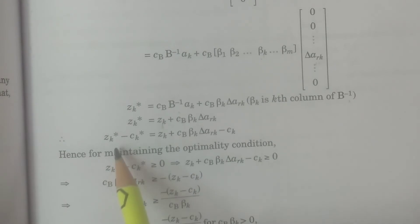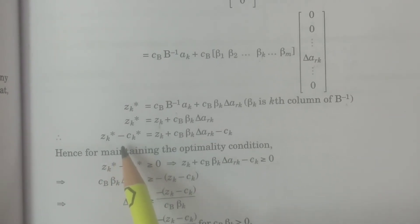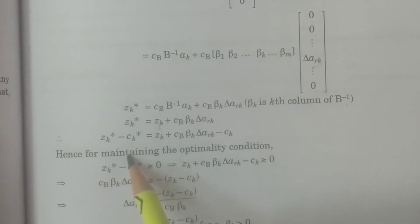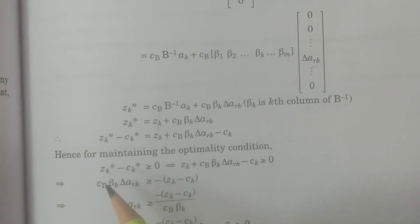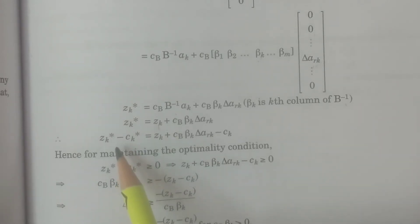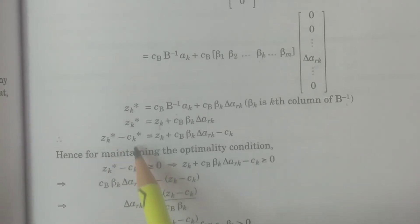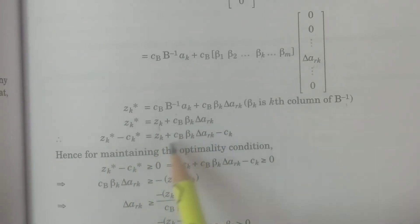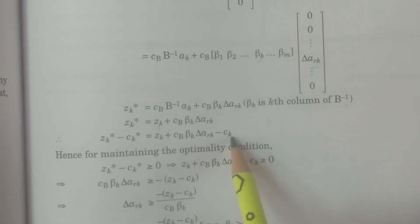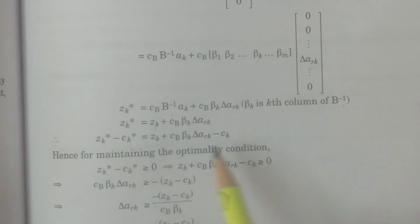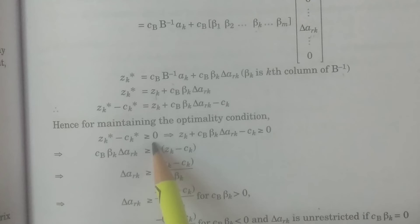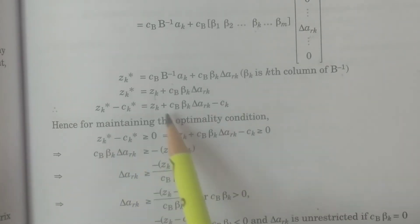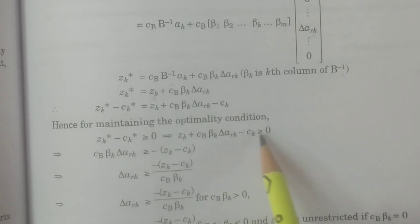Now, to prove optimality, the optimality condition requires zk-star minus ck-star greater than or equal to zero. The remaining net evaluations are already greater than or equal to zero since we started from the optimum solution; the change is only observed in element ark. So zk-star minus ck-star equals zk plus cb times beta-k times delta-ark minus ck, and this must be greater than or equal to zero.